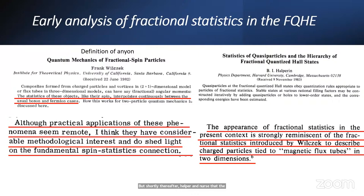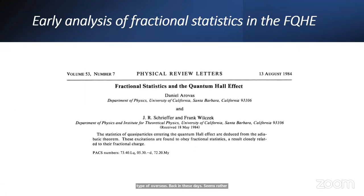And it's kind of interesting. He says the appearance of fractional statistics in the present context is strongly reminiscent of the ideas introduced by Wilczek to describe charged particles tied to magnetic flux tubes in two dimensions. Now, this was in the early 80s, before the advent of composite fermion theory and all that we know now and have learned and take for granted. So considering these toy models of charged particles tied to vortices back in these days seems rather inspired 40 years later.